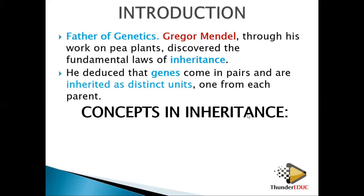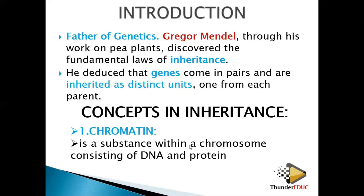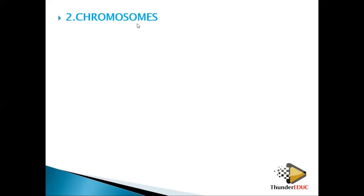Looking at the concepts of inheritance — the terminologies. Chromatin is a substance within a chromosome containing DNA and protein. Basically, chromatin is DNA in thread-like, coiled form. When the chromatin condenses and shortens and becomes thick, it forms what you call a chromosome. So chromatin and chromosomes are the same thing but in different versions.